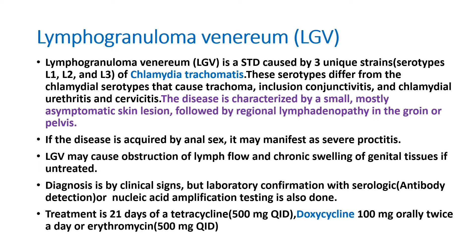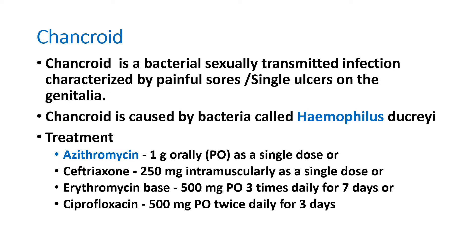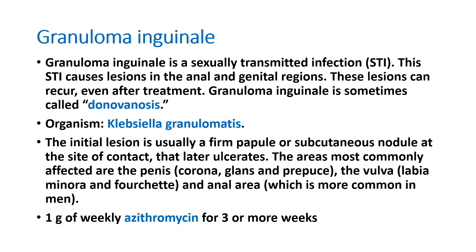Treatment for LGV is mainly 21 days of doxycycline or tetracycline. Another STD is chancroid, a bacterial infection characterized by painful single ulcers on the genitalia, caused by Haemophilus ducreyi. Treatment: azithromycin 1 gram orally as a single dose, ceftriaxone 250 mg intramuscularly as a single dose, erythromycin base 500 mg three times daily for 7 days, or ciprofloxacin 500 mg BD for 3 days.